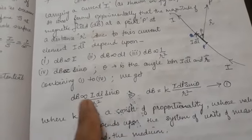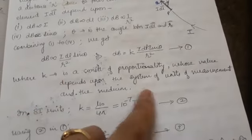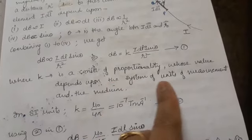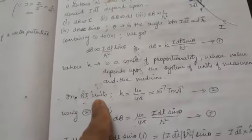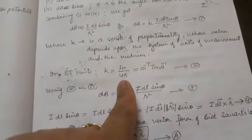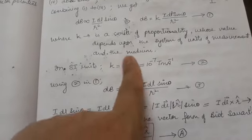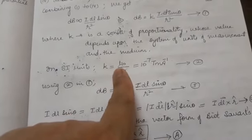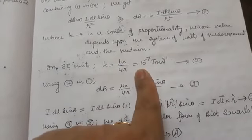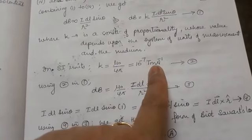Combining all these factors and removing the proportionality, we get constant K, whose value depends upon the system of units and the medium. In SI units, K comes out to be mu-naught upon 4 pi, where mu-naught is the permeability of air, and its value is 10 to the power minus 7 tesla-metre per ampere.